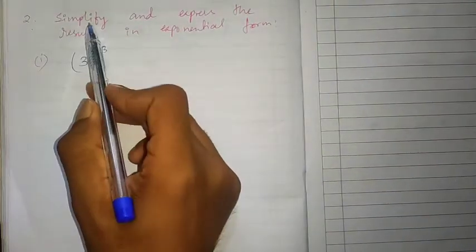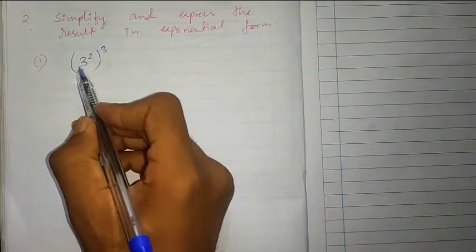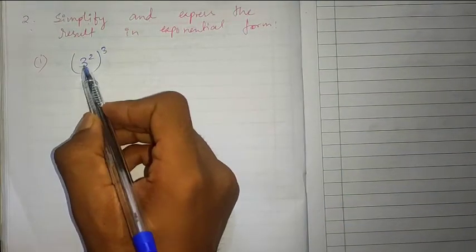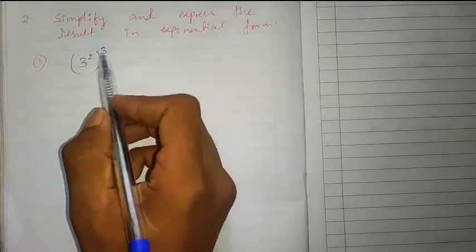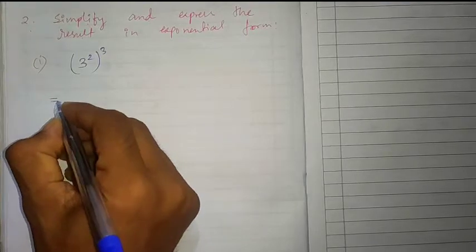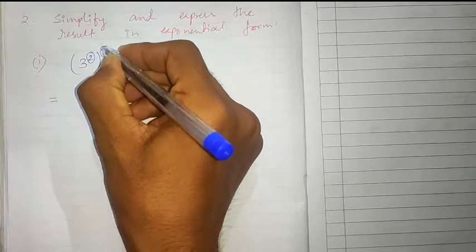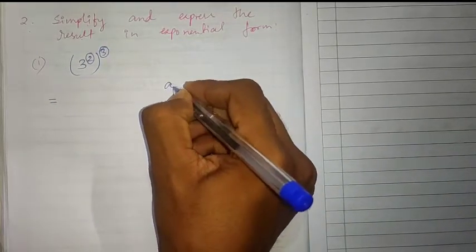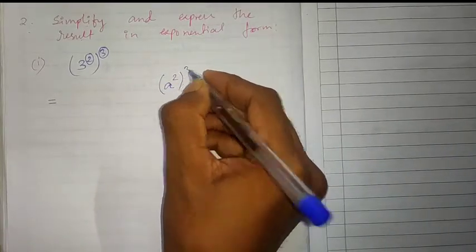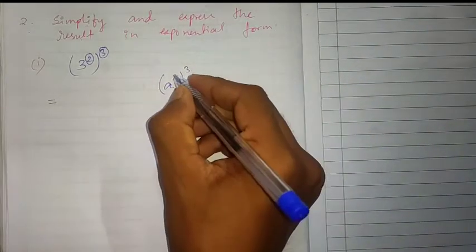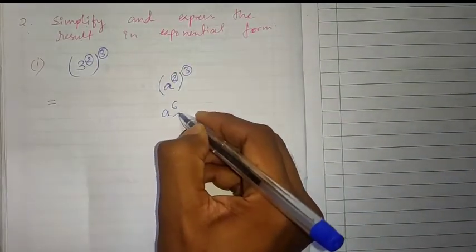Number 2: simplify and express the result in exponential form. Whenever the expression is in the form 3 raised to 2 in bracket, raised to 3, how will we proceed? When a base has a power and which also has one more power, we will just multiply these two powers. That is 3 raised to 2 times 3, which equals 3 raised to 6.